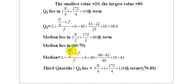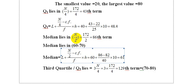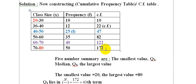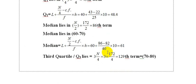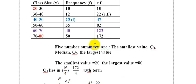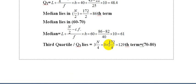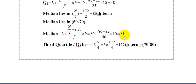The median formula is: Median equals L plus (N/2 minus CF) divided by F, multiplied by S. The median lies in class 60-70, so L equals 60, N by 2 is 86, CF is 82, F is 40, and S is 10. This gives median equals 61.